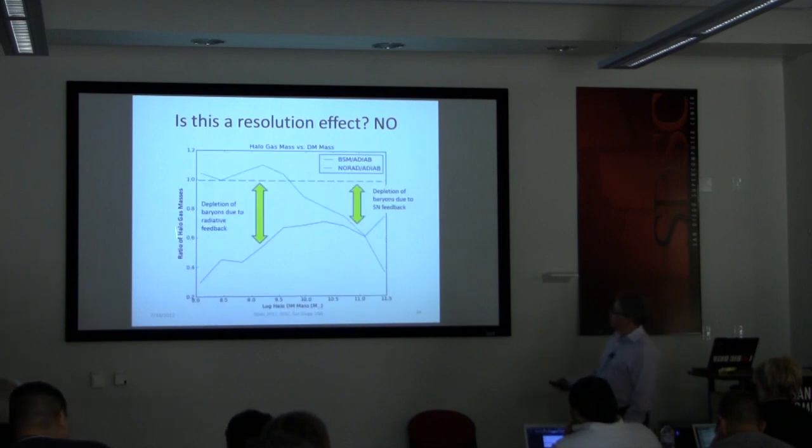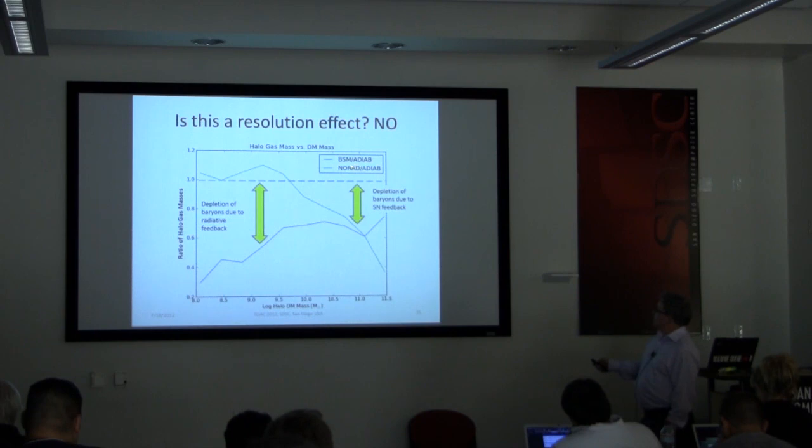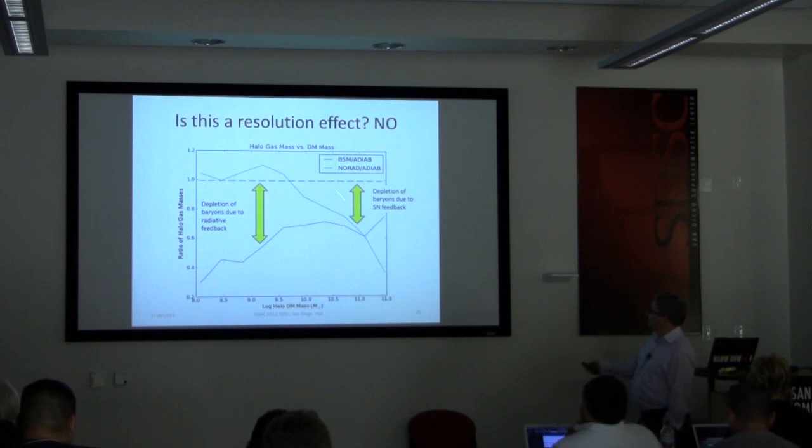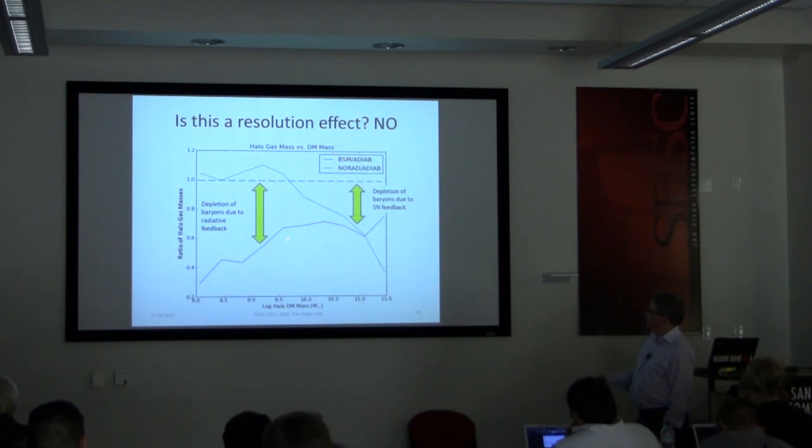So here's plotting ratios. So this is the ratio of the halo gas mass versus the dark matter halo mass. And the green line is the ratio of the non-radiation simulation with star formation and feedback to the adiabatic simulation. And it's kind of noisy, but it's above one in these low mass halos. It becomes less than one in the highest mass halos. And that's evidently depletion due to baryons, depletion of baryons due to supernova feedback. However, if we plot the ratio of the radiation run, this is the radiation hydrodynamic run divided by the adiabatic simulation. You see the trend goes the opposite way. The lowest mass halos are depleted the most. And this can only be due to radiative feedback. All right. So now, hopefully I've convinced you that it's the physics that's doing this and not the numerics.